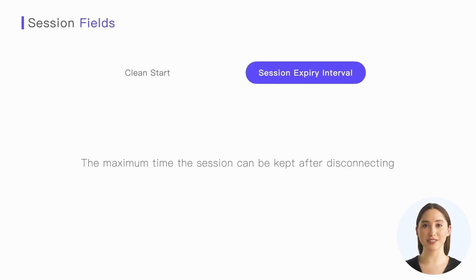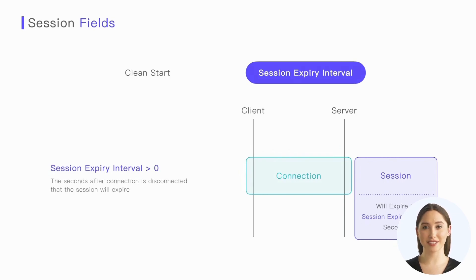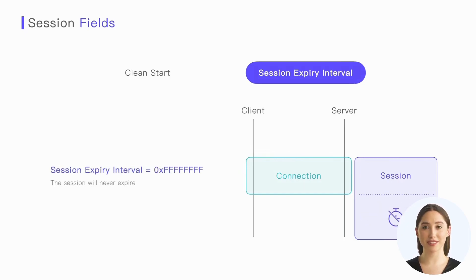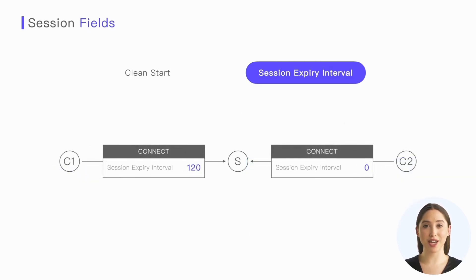There are three typical values for the Session Expiry Interval. Setting it to 0 means the session will end when the network connection is disconnected. Setting it to a value greater than 0 indicates the number of seconds after disconnection that the session will expire. Setting it to 0xFFFFFFFF, which is the maximum value allowed for the field, means the session will never expire. Each client can set its own session expiry interval according to its requirements — some may not need persistent sessions, others may require sessions to be retained for a few minutes or longer. MQTT also allows clients to reset the session expiry time when disconnecting, such as extending the interval or canceling the persistent session.